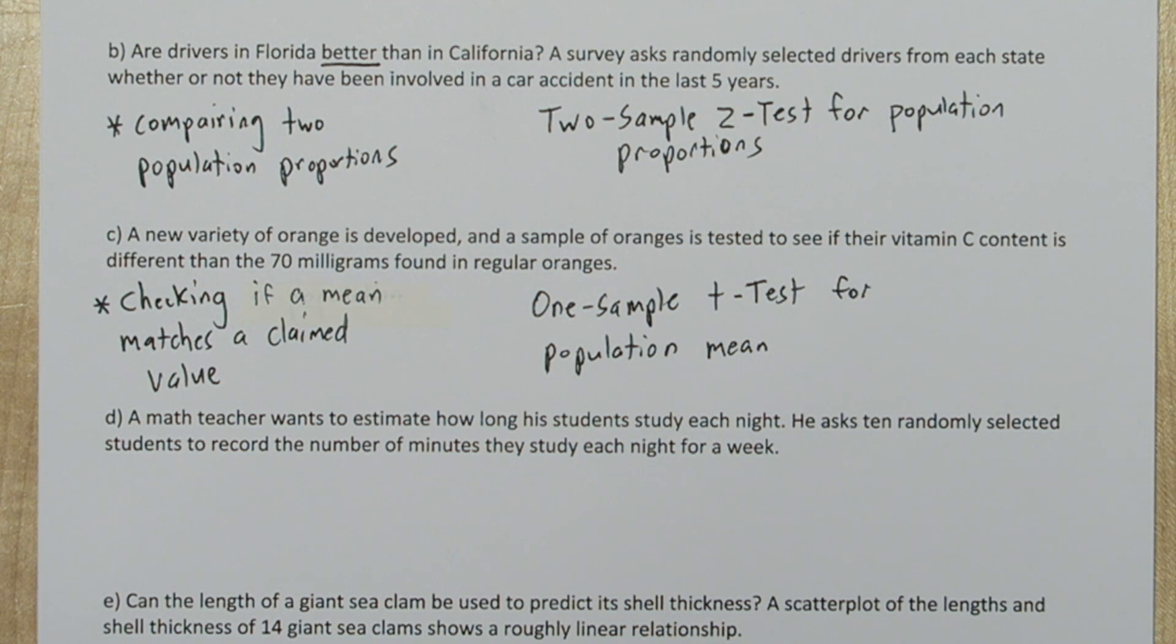and down here, since we're only interested in any difference, that makes this a two-sided test. We want to know if the oranges have more or less than 70 milligrams of vitamin C.